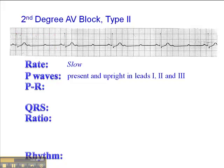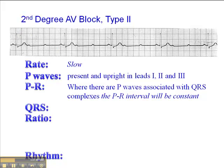Or even hemodynamically unstable, in which case they would need electrical therapy such as transcutaneous pacing. The P waves are present and upright in leads 1, 2, and 3. The PR interval, where there are P waves associated with a QRS complex, is constant. This PR interval here, associated with a QRS, is consistent with this one, this one, and that one. We don't see that in other heart blocks such as second-degree AV block type 1 or third-degree AV block, though you would see it in a first-degree AV block.